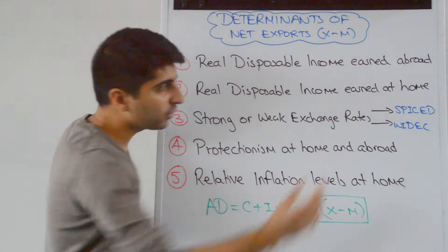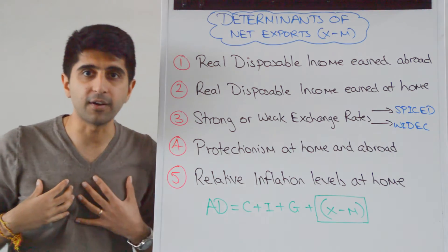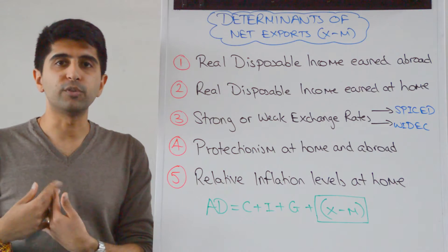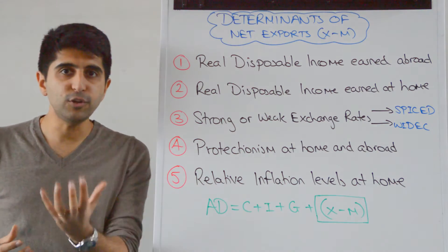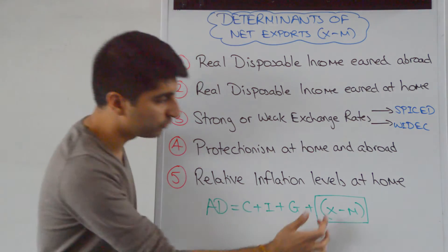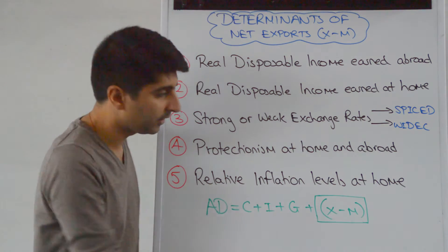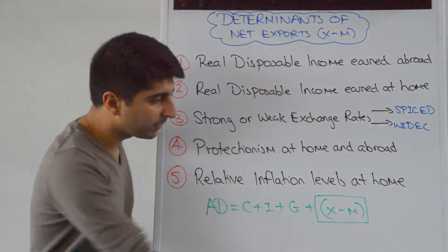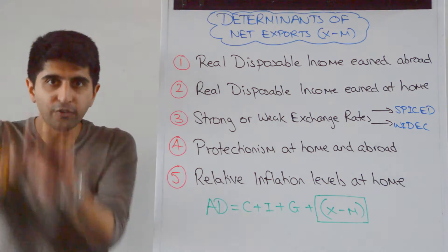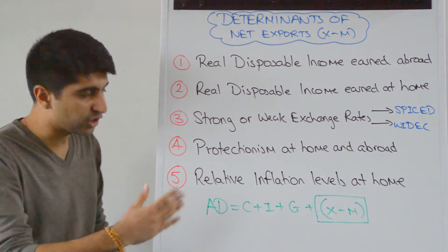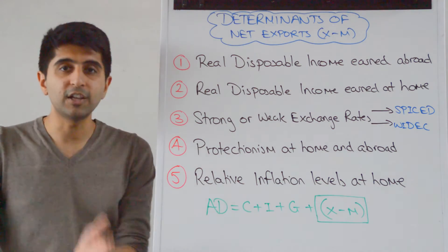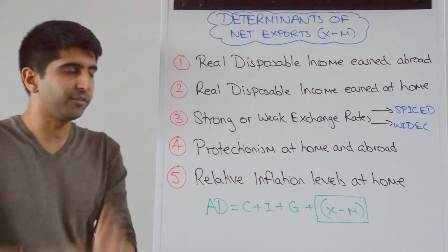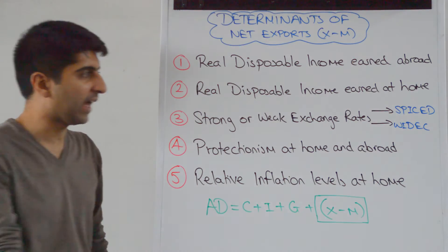At the same time, exports are more expensive — they're dearer. That means demand for exports will fall and revenues generated from exports will fall, reducing X. So a lower X and a higher M means this bracket is going to fall in value and shift AD left. A strong exchange rate is bad for an economy in terms of AD shifting left.